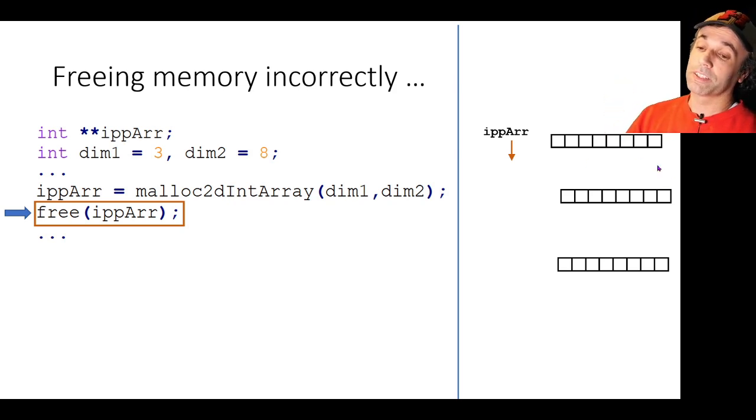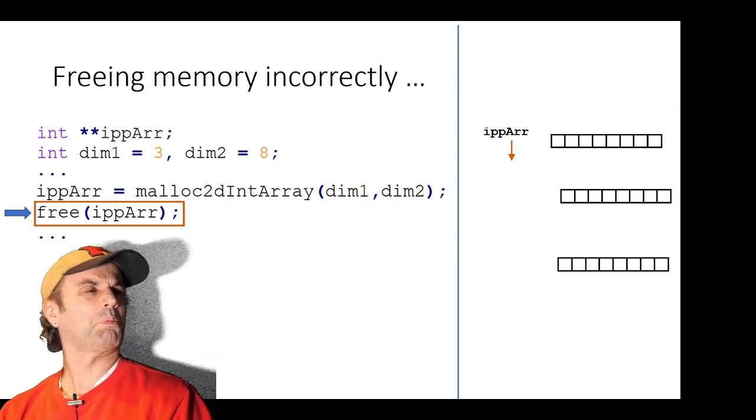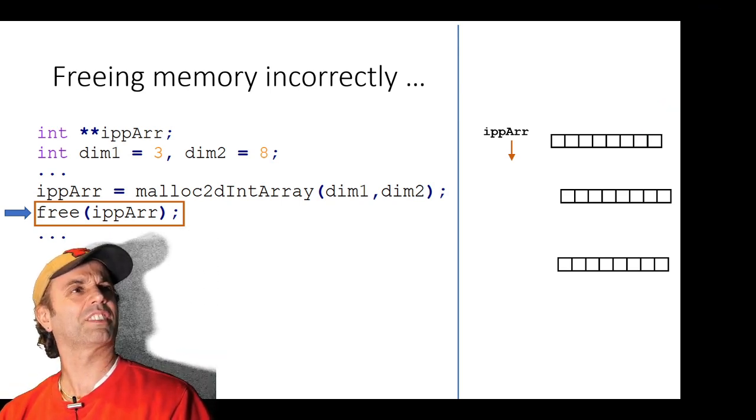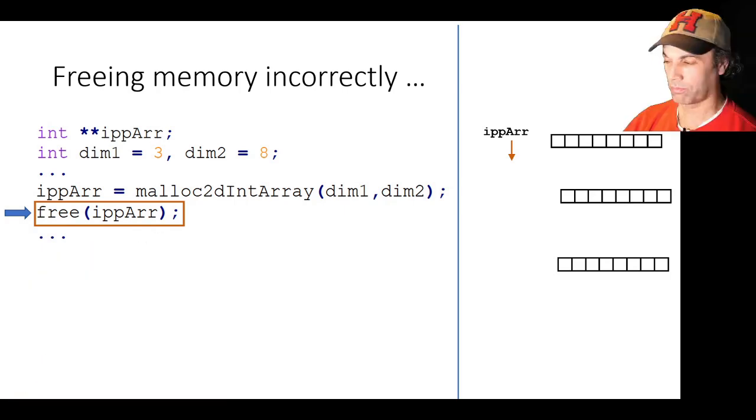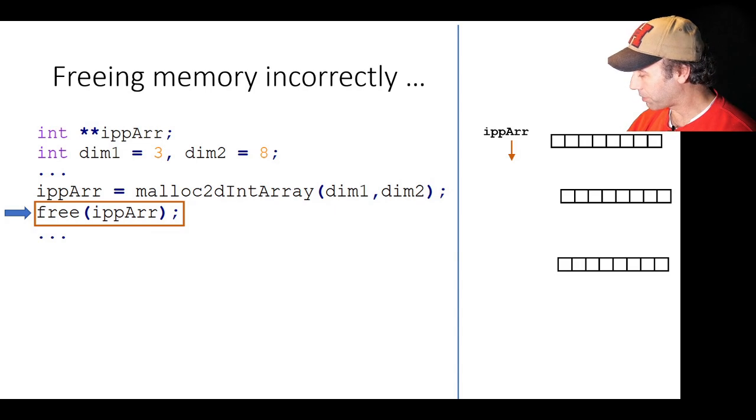So all that gets freed is the three int stars that were in that array. So you've got 24 bytes freed but you've still got three times 32 left here and that's a memory leak and that can get expensive if that's happening in a loop and you're allocating loads of these arrays very quickly. Are you sure about that? That seems really inconvenient. Have you got any evidence that that's actually the case? I think it might just free all the memory.